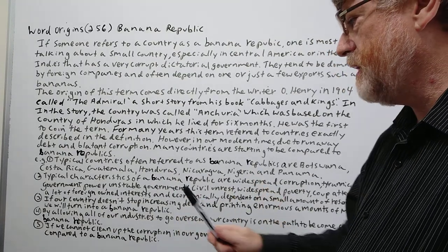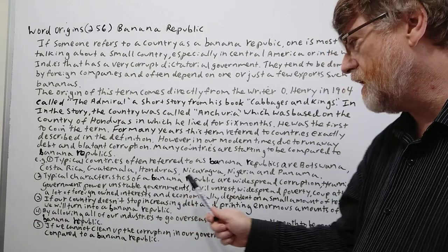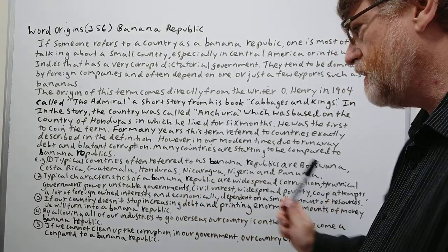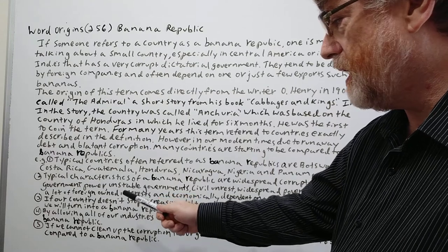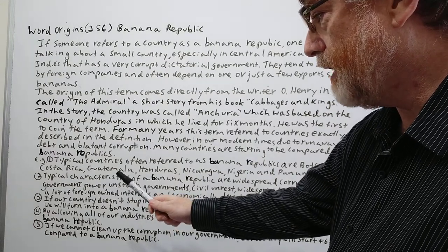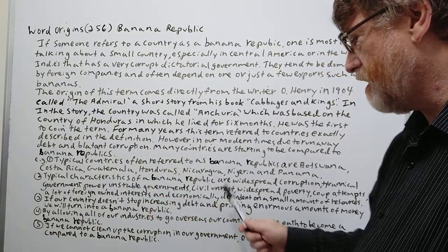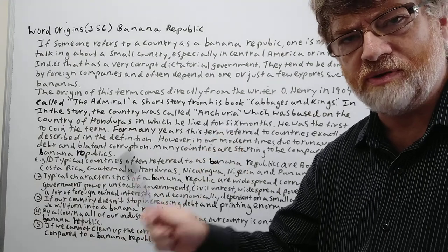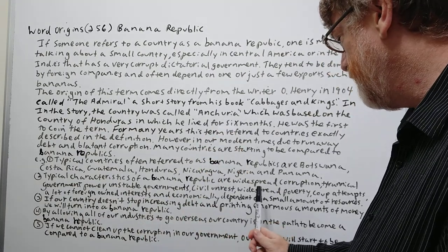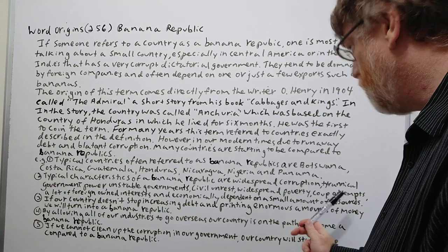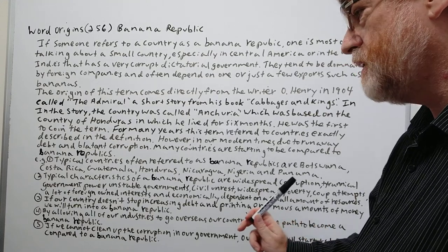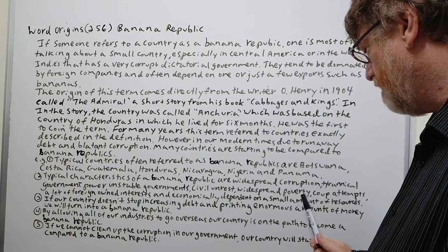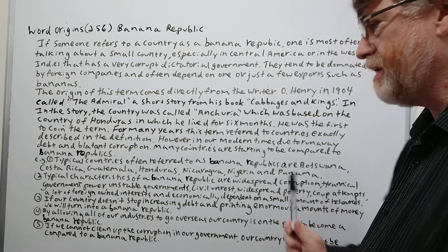Typical characteristics of a banana republic are widespread corruption, tyrannical government, unstable governments, civil unrest like people protesting or wanting to take over the government, widespread poverty, coup attempts, a lot of foreign-owned interest, and economic dependence on a small amount of resources.